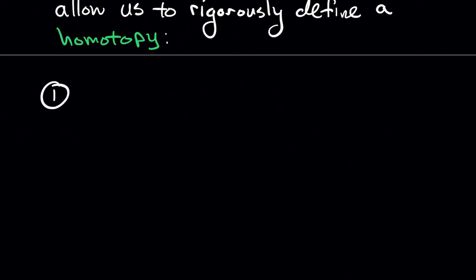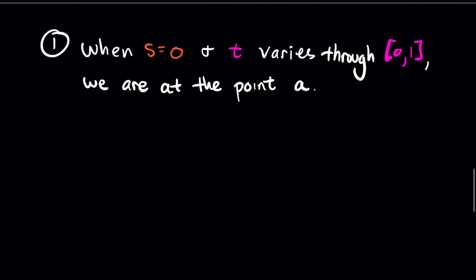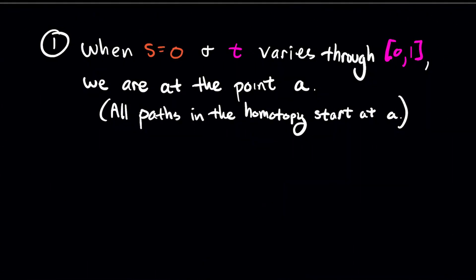Number 1: When S equals 0 and T varies through the interval 0 to 1, we are at the point A. In other words all the paths in the homotopy start at A.